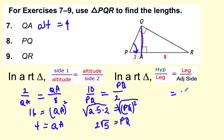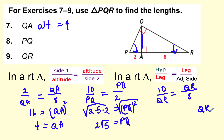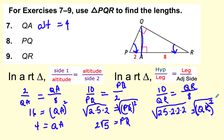One more — finding leg QR. QR is the geometric mean between the whole hypotenuse of 10 and its adjacent side of 8. So QR squared equals 10 times 8. Factoring: 2 times 5 times 2 times 2 times 2. Taking the square root, I can pull out 4, leaving √5 inside. So QR equals 4√5.